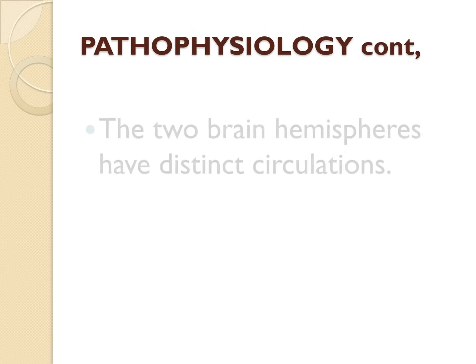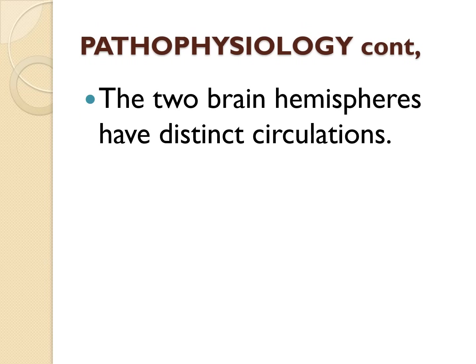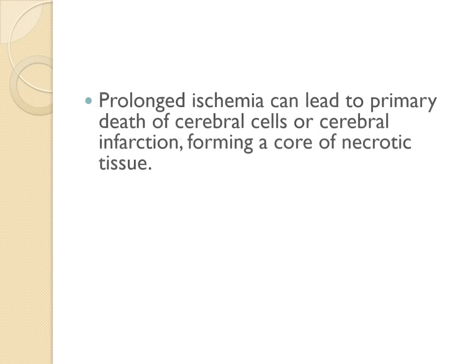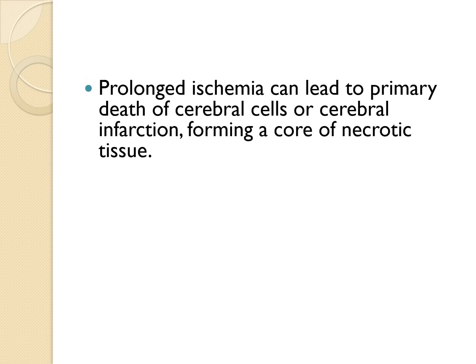Functionally, the two brain hemispheres have separate circulations. The complex process of cerebral autoregulation maintains blood flow to the brain at a fairly constant rate of 750 mls per minute. Prolonged ischemia can cause primary death of cerebral cells or cerebral infarction, which creates a core of necrotic tissue.